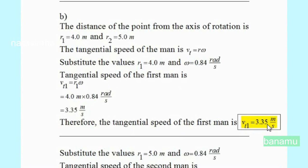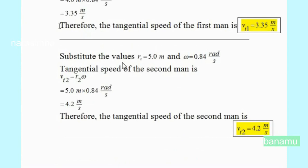The tangential speed of the second person is Vt equal to R2 times omega, where R2 is equal to 5 meters and omega is equal to 0.84 radians per second. Therefore, Vt is equal to 4.2 meters per second.